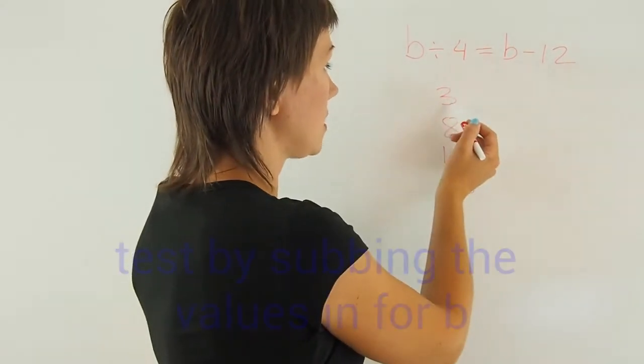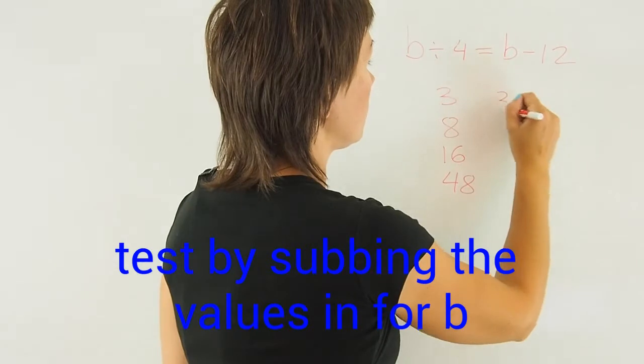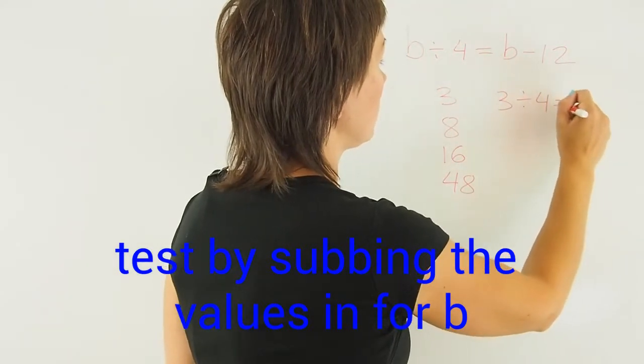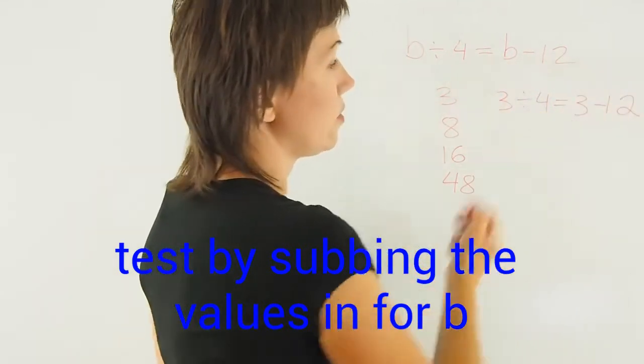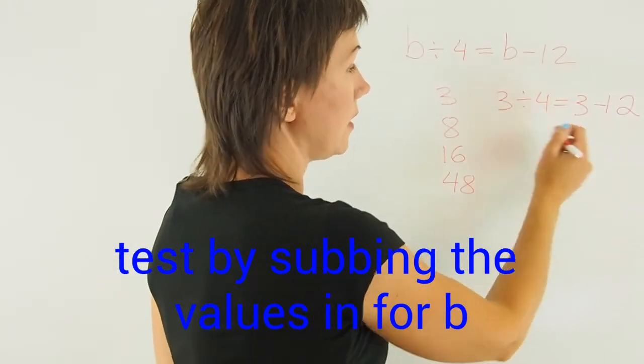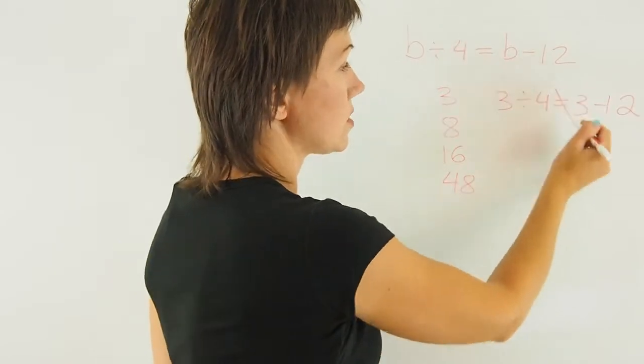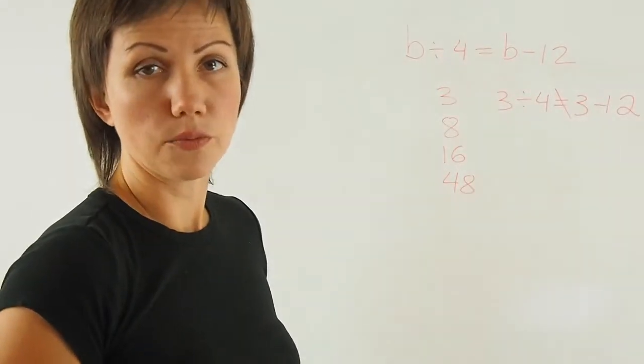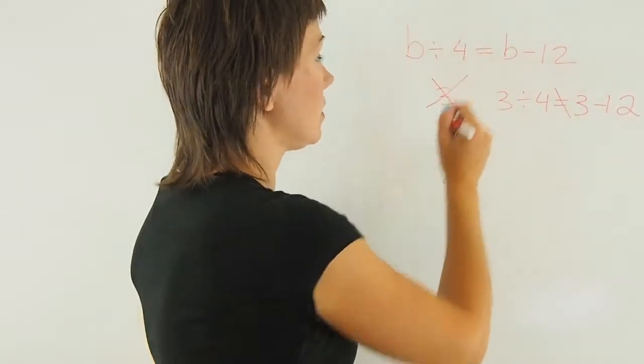So if I test 3, 3 divided by 4 equals 3 minus 12. 3 over 4, 3 minus 12 is negative 9, and here I have 3 over 4, so it clearly does not work. So 3 is gone.